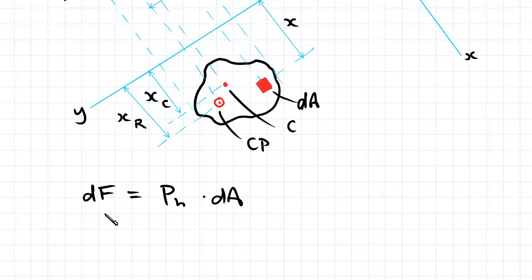So we're considering dF, which equals P times dA. So our pressure equals force on area, multiplying the area across gives us dF equals PdA.